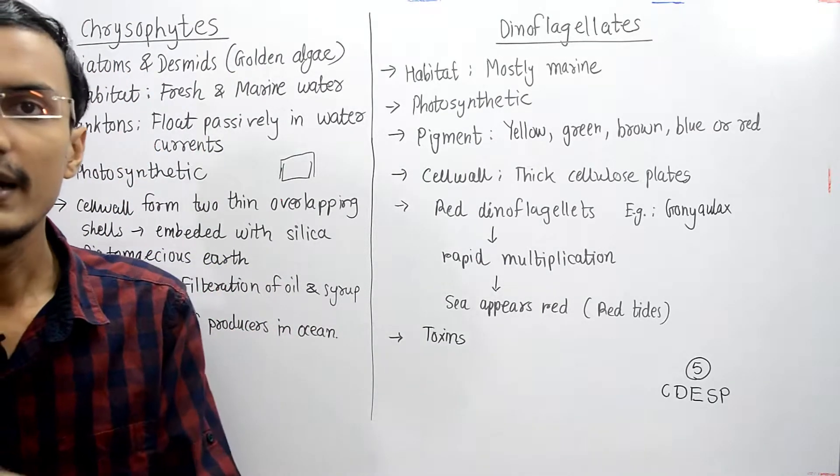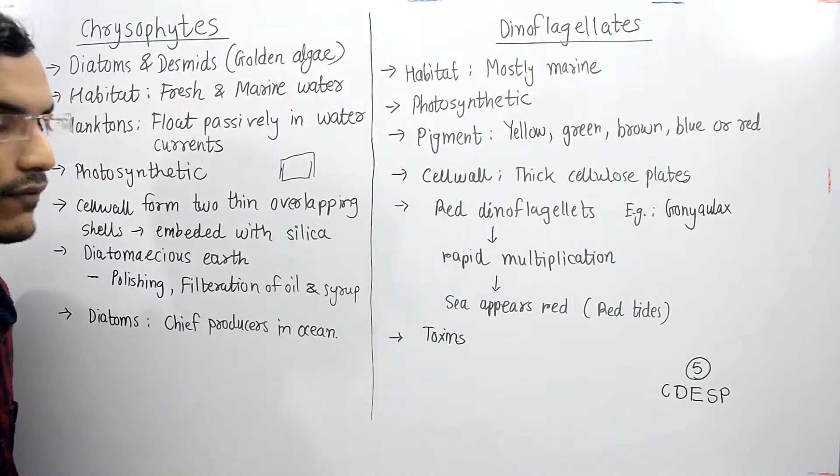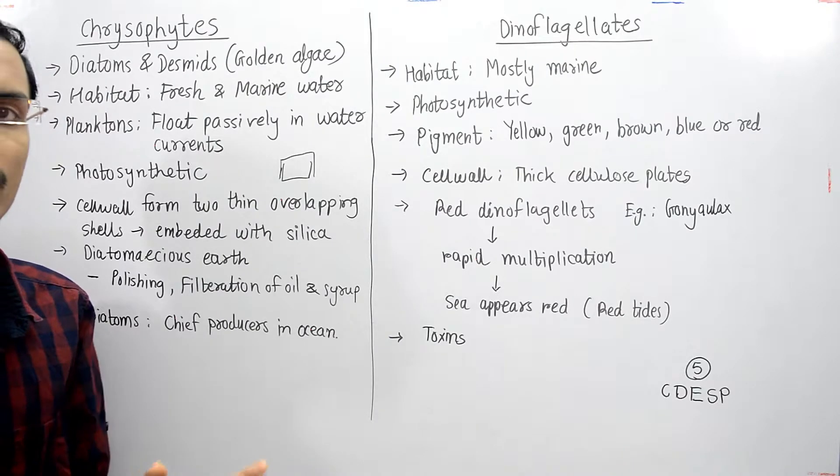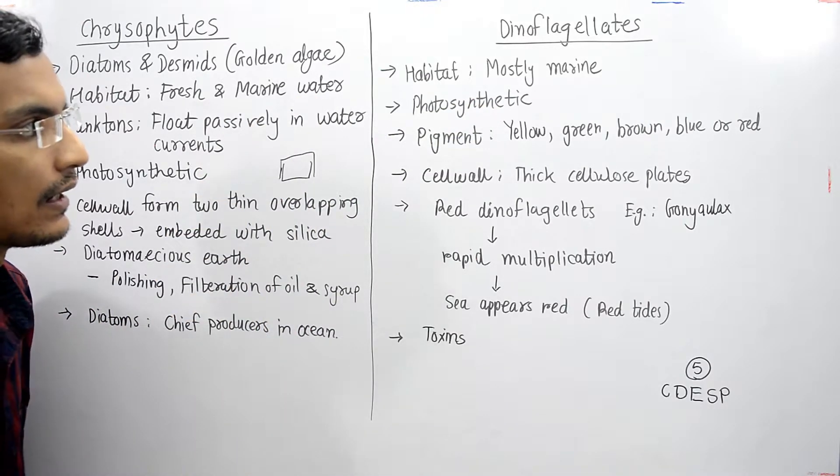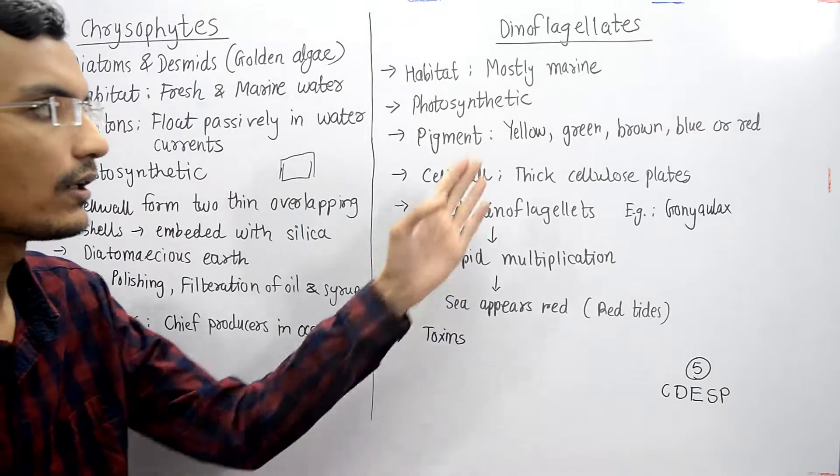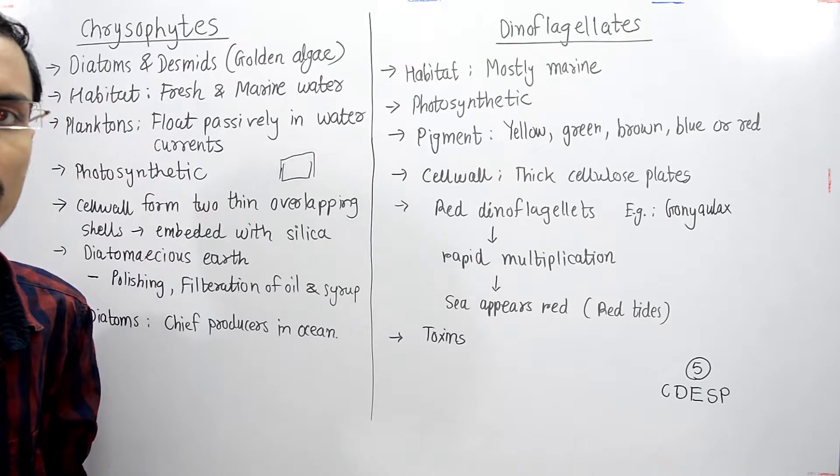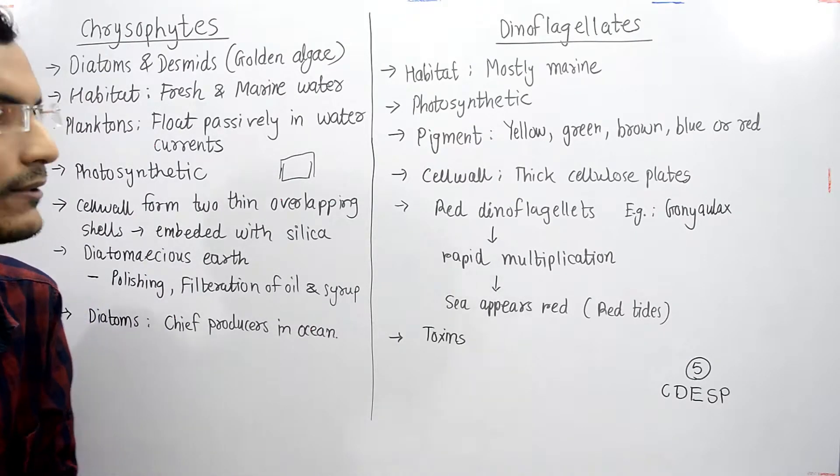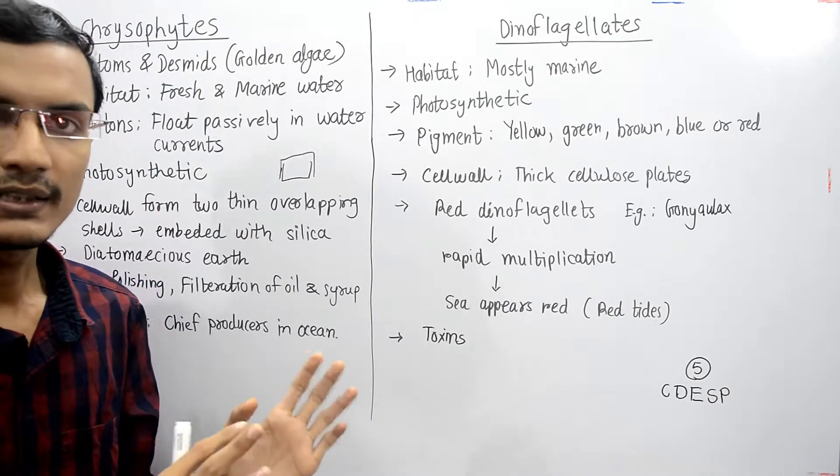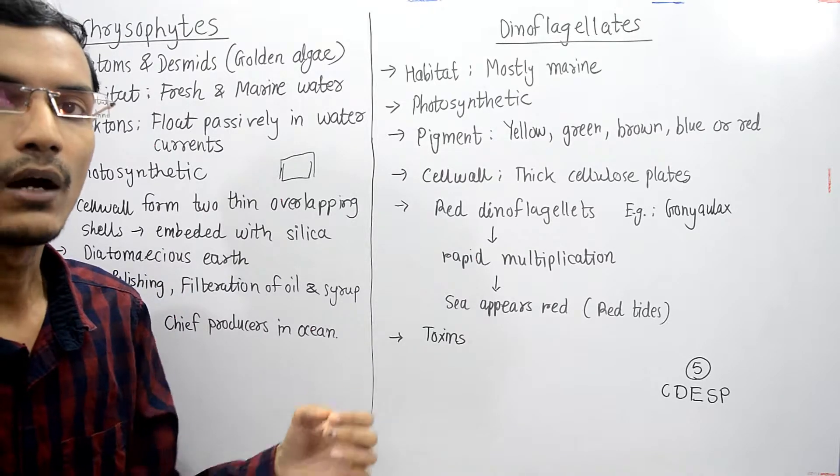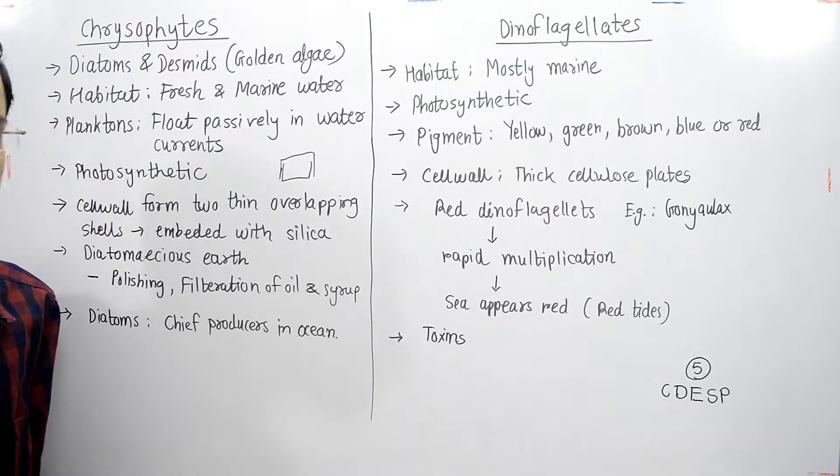Dinoflagellates are mostly marine, so their habitat is marine. They are photosynthetic with an autotrophic mode of nutrition. They contain pigments which are yellow, green, brown, blue, or red, so depending on the pigment, they have colorful cells. Their cell wall is made up of thick cellulose plates.